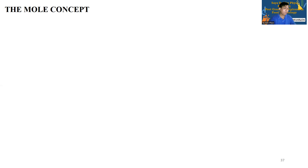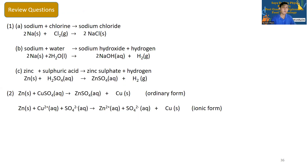The substances that take part in the reaction are called reactants. The substances that are produced in the reaction are called products. The law of conservation of mass states that the total mass of the reactants is equal to the total mass of the products.